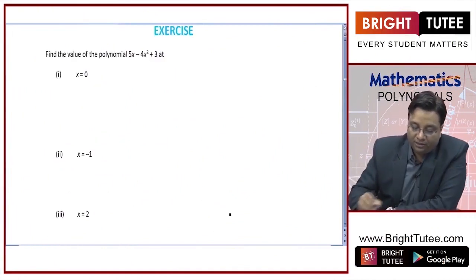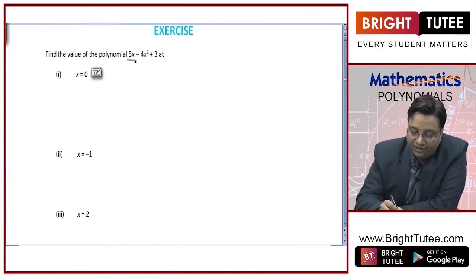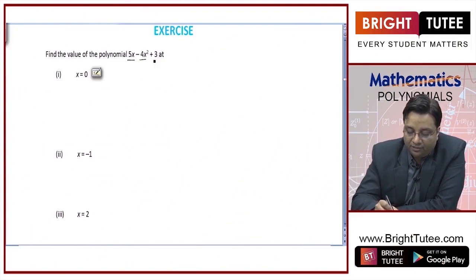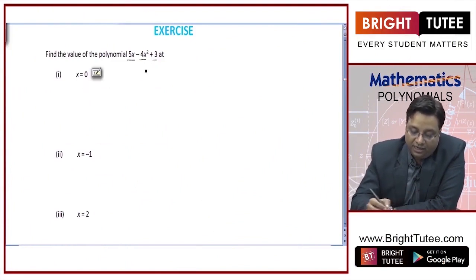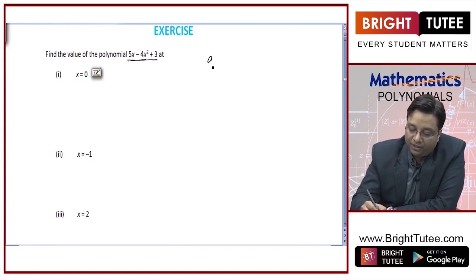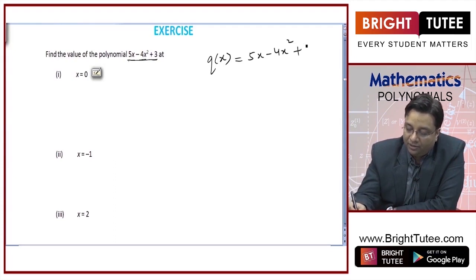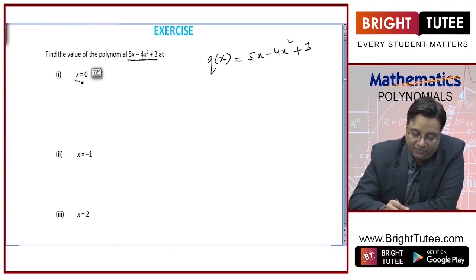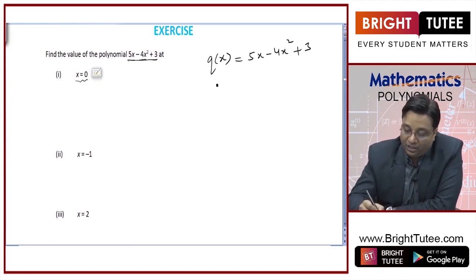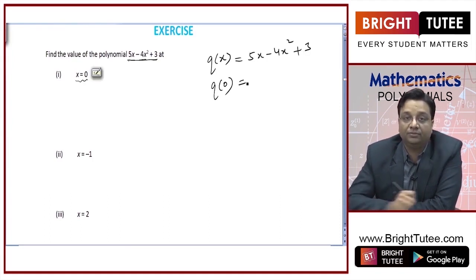Find the value of polynomial 5x minus 4x squared plus 3 at x equal to 0. I am assuming this polynomial to be q of x, which is equal to 5x minus 4x squared plus 3. When I say find the value of polynomial at x equal to 0, I mean I need you to find q of 0.